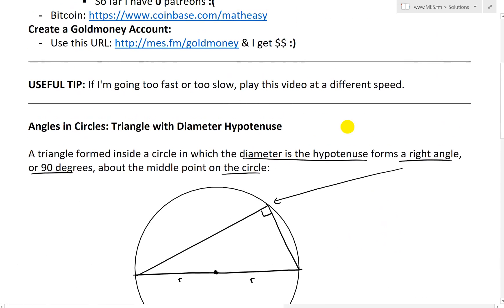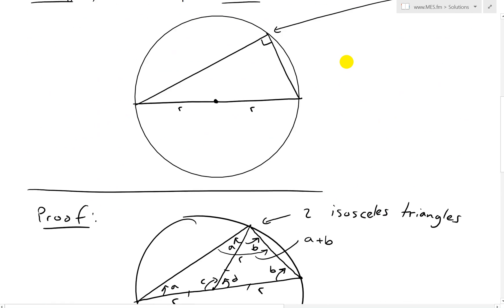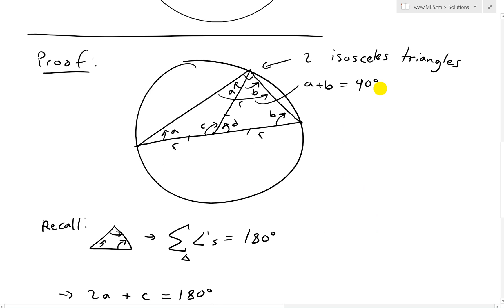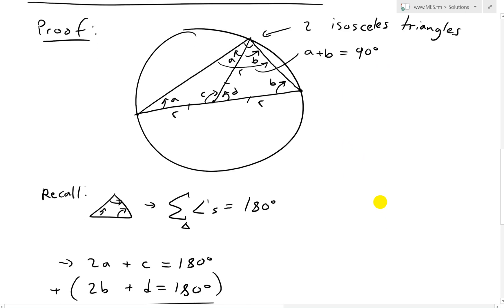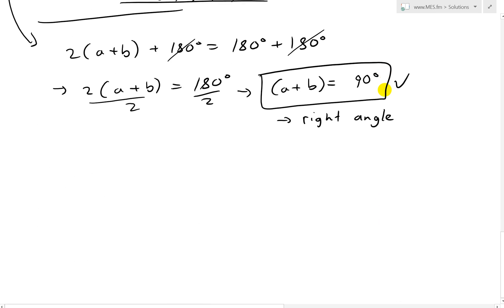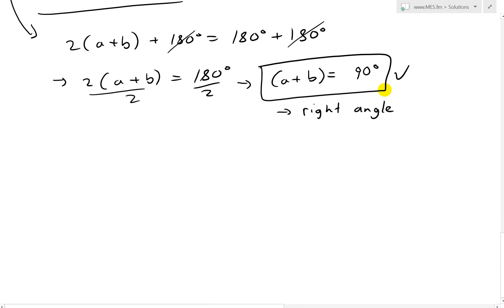So right here we get a right angle — A plus B equals 90 degrees. That's the proof using these angle relationships.